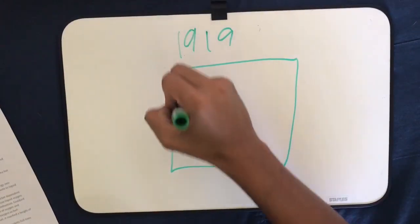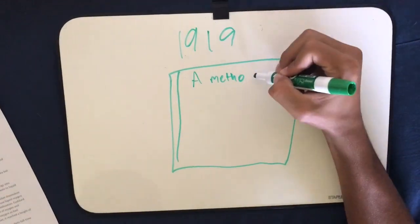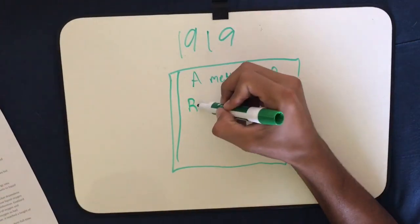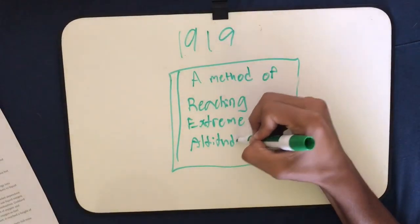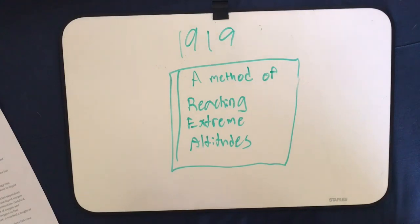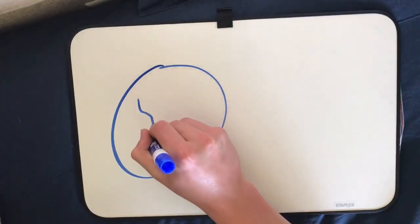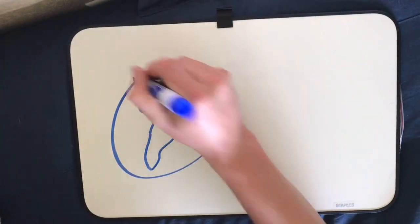His research was published in 1919 in the exposition, A Method of Reaching Extreme Altitudes, which detailed mathematical theories of rocket propulsion and his gunpowder-fueled rocket experiments. It also included a proposal regarding a rocket flight to the moon.